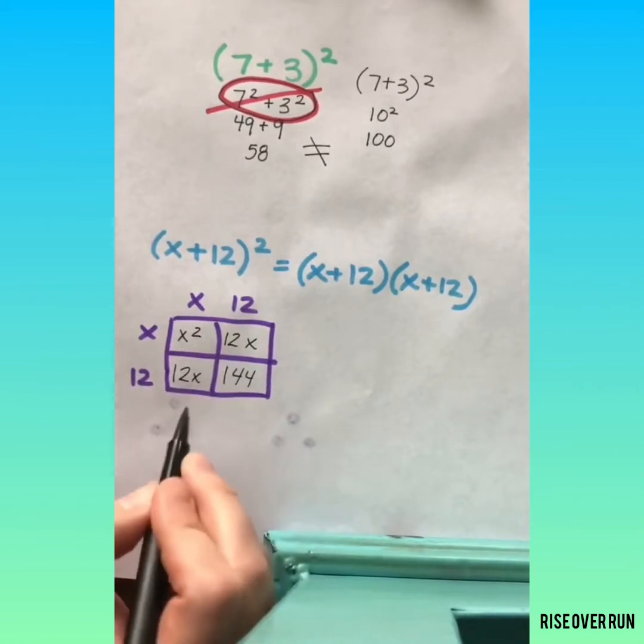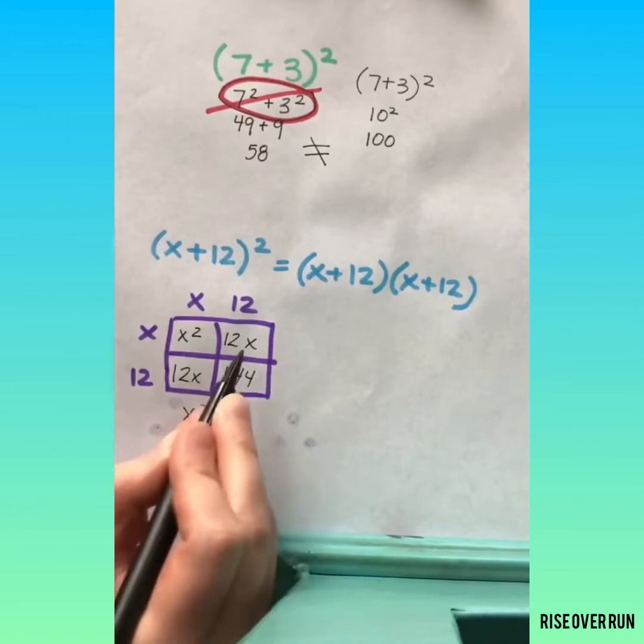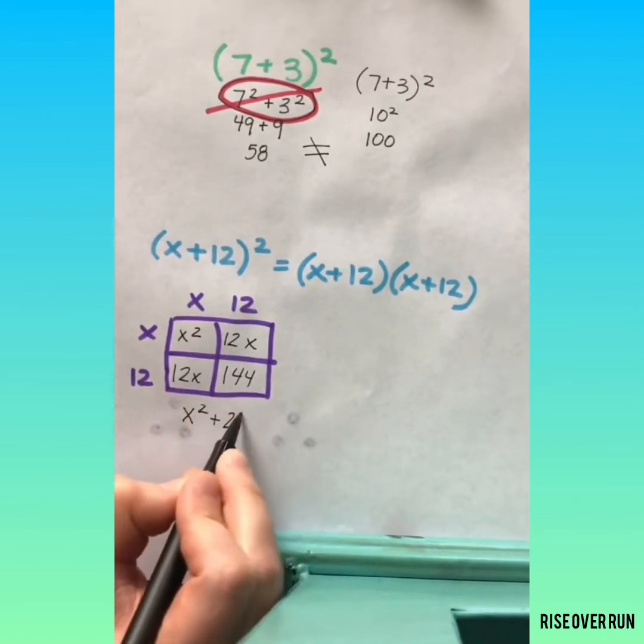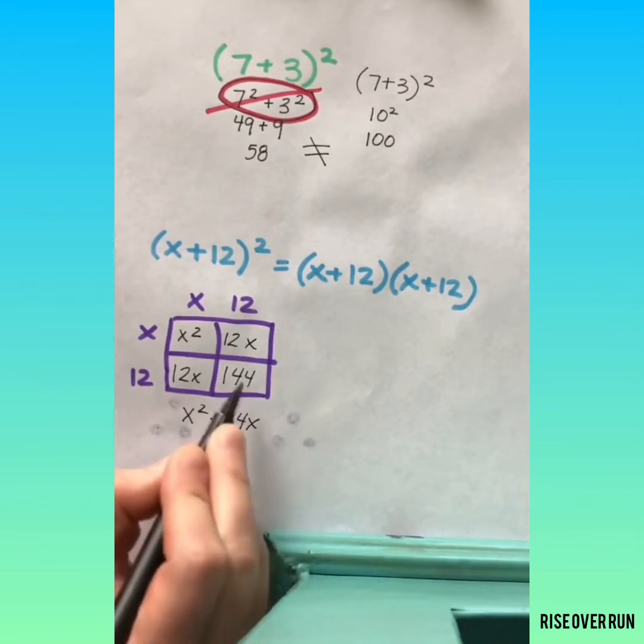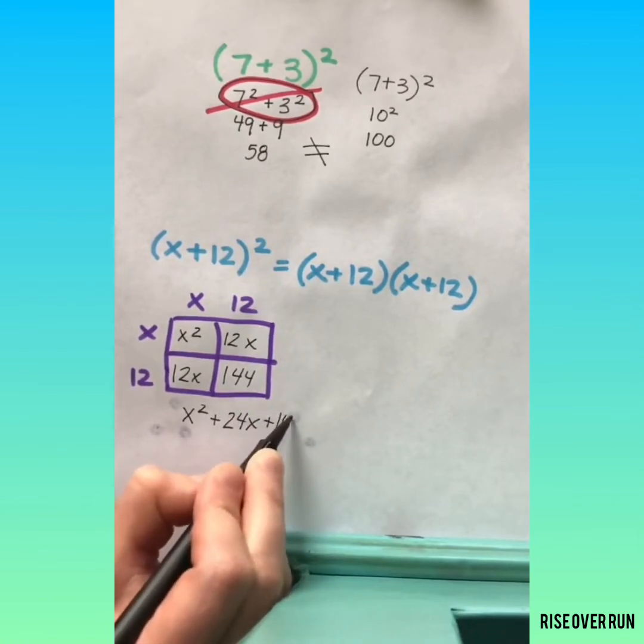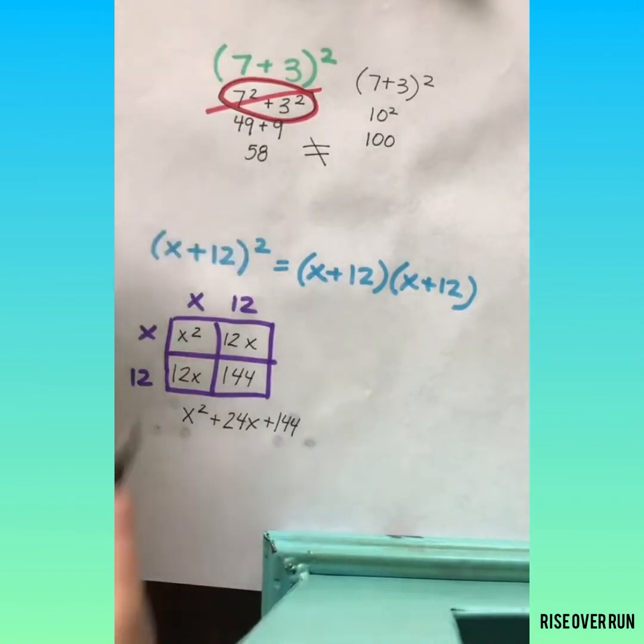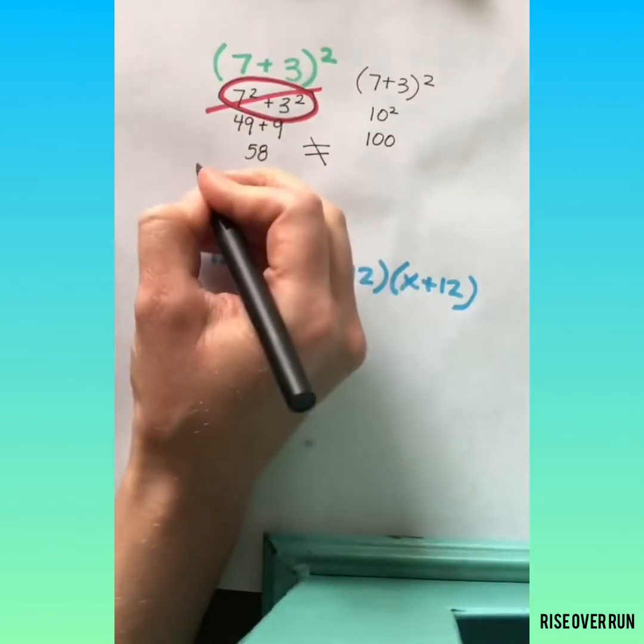Now if I write this as a polynomial I have X squared. Notice I have like terms here. 12X and 12X combined to give me 24X and then my constant is 144.